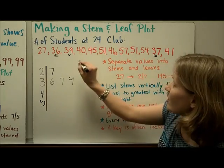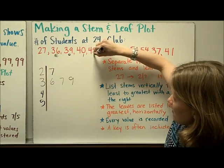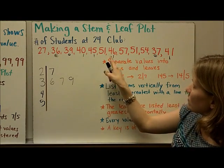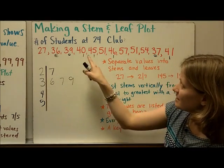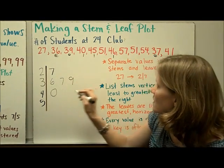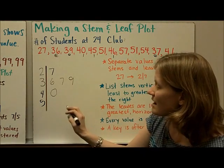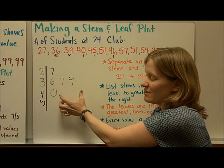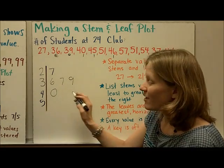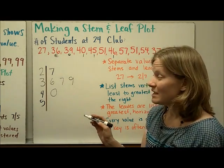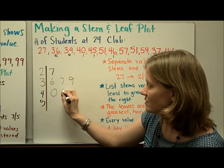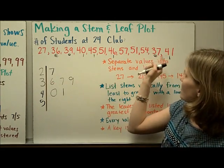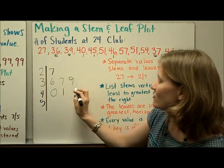Now I'm going to go to the 40s and mark those with lines. I had four values in the 40s. Least to greatest: 0 comes first, then 1. Be careful when listing leaves to keep them evenly spaced — not more squished or more spread apart — so your stem and leaf plot is easy to read and compare. So I have 40, 41, then 45 and 46.